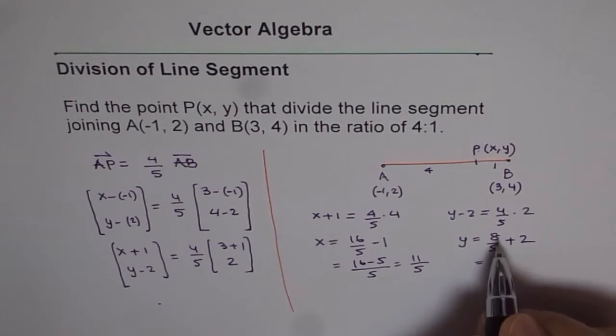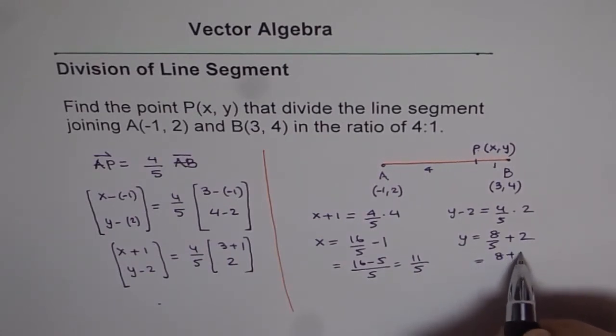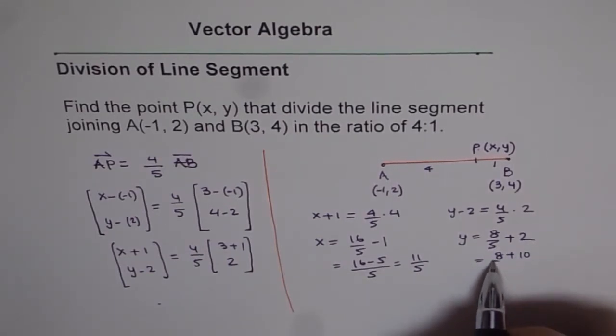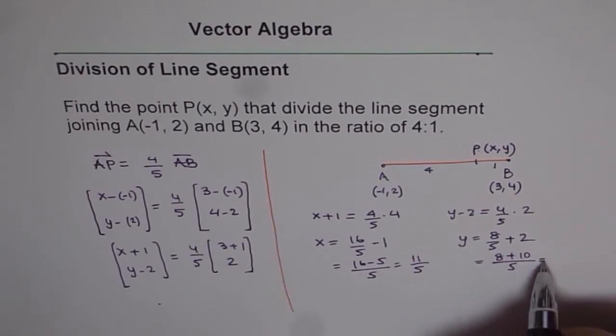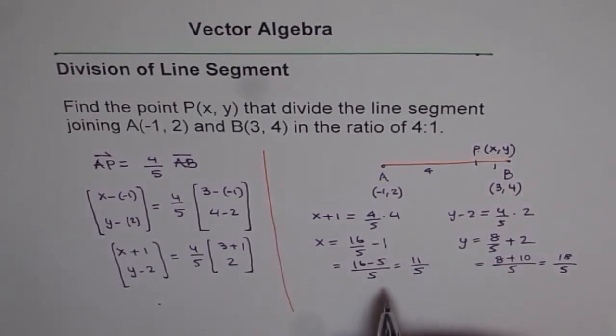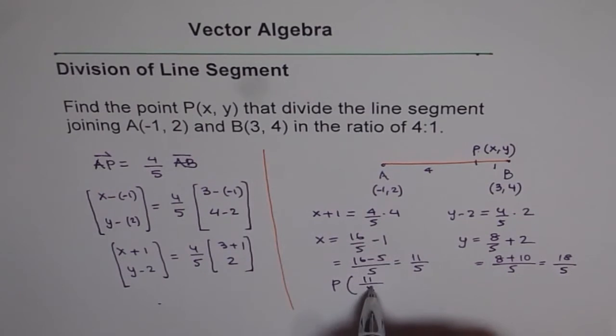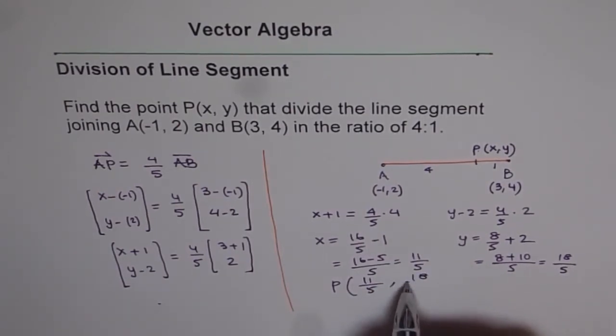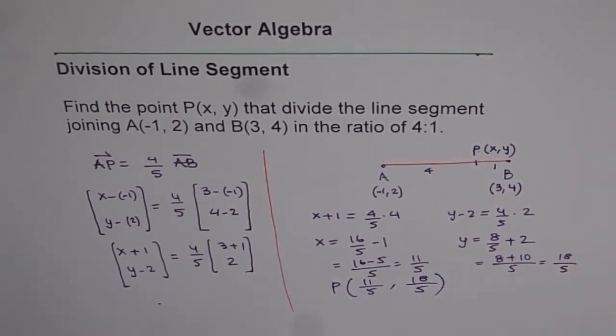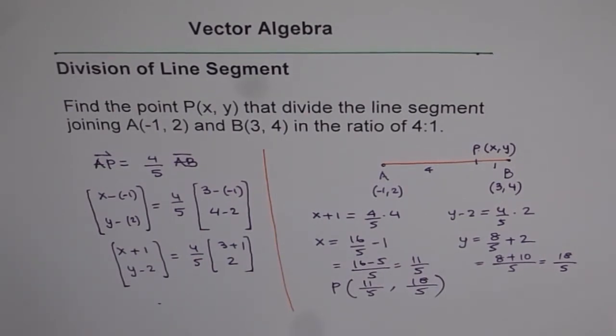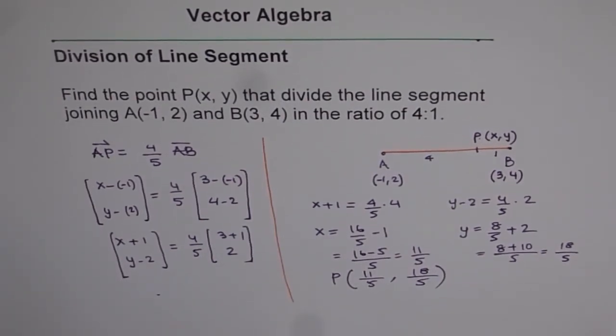And on this side, it gives us 8 plus 10 over 5 and that gives us 18 over 5. And therefore, the coordinates of the point P is 11 over 5 for X value and 18 over 5 for Y value. Have a good look at it, and then think how we solve this question.